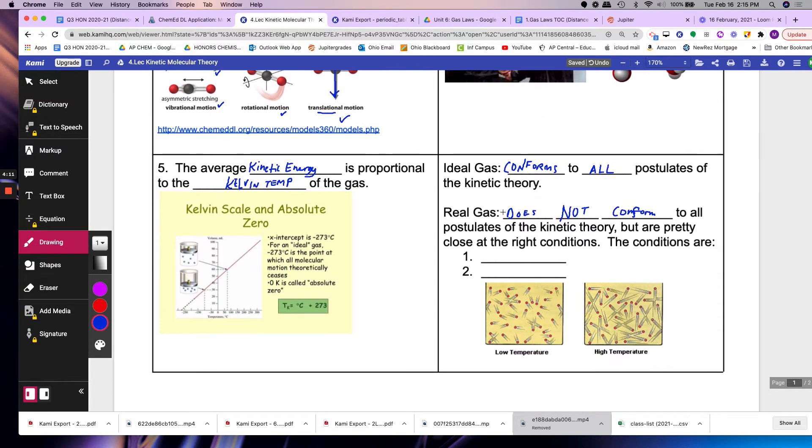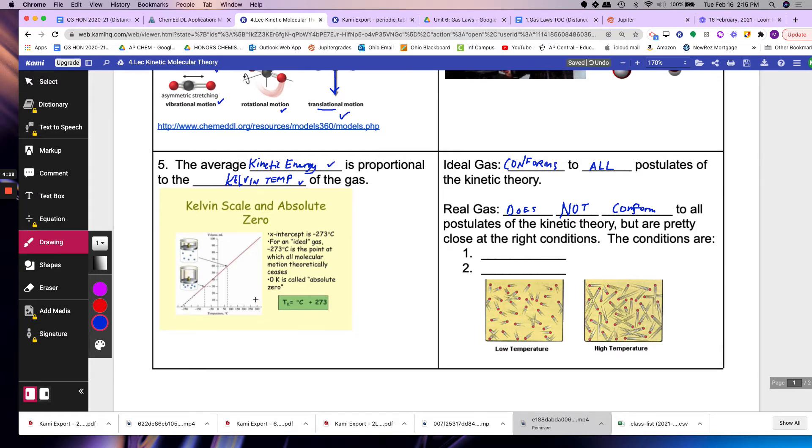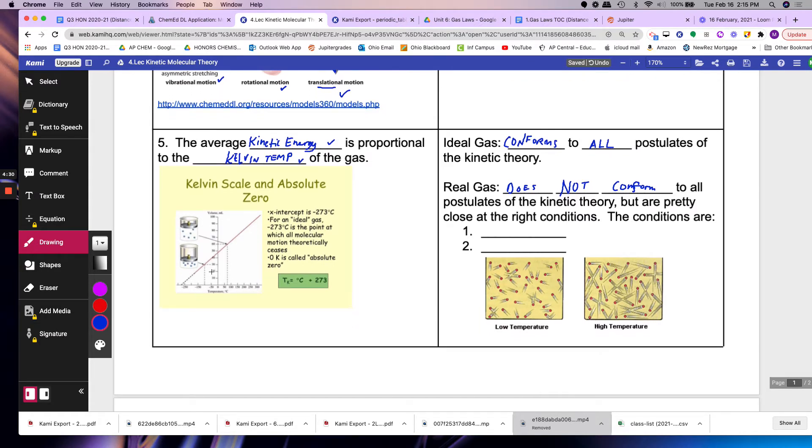Number five, the kinetic energy is proportional to the Kelvin temperature of the gas. What that means is if you heat up the molecule or the substance, as you increase the temperature the kinetic energy will also increase.